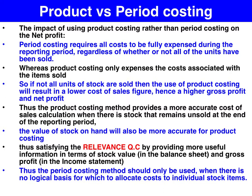If not all units have been sold during the period, that's when we get a discrepancy. Under the period technique, all costs have been fully expensed regardless of whether the items have been sold or not. Under the product method, it only expenses the costs associated with the items sold. Any items unsold are yet to be expensed.